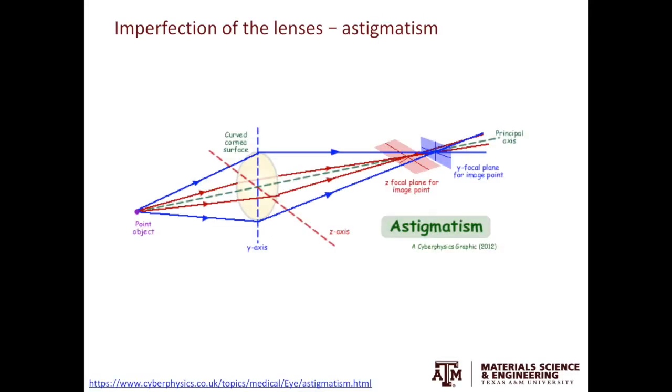In the case of astigmatism, the focal point of the ray from the x-axis is different from that of the y-axis. You can see there are two different focal points. This leads to the smearing of the image.